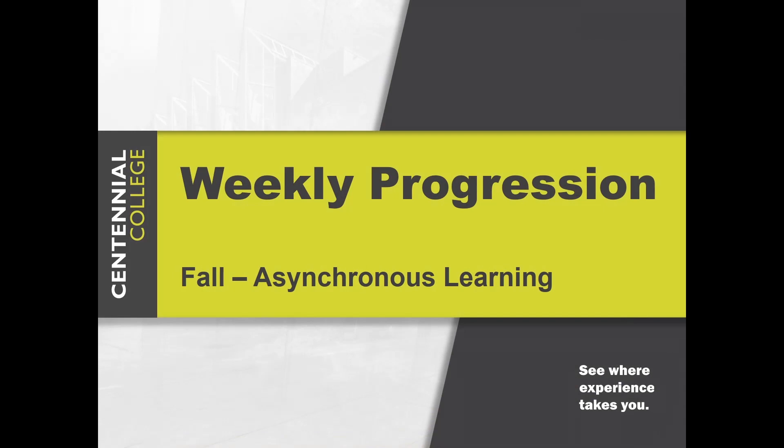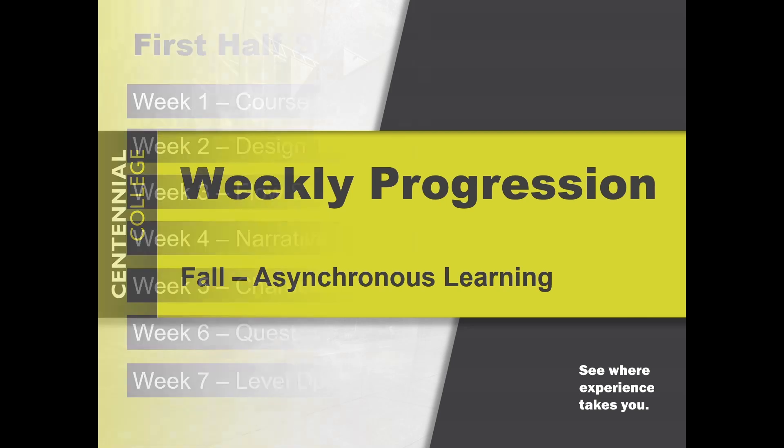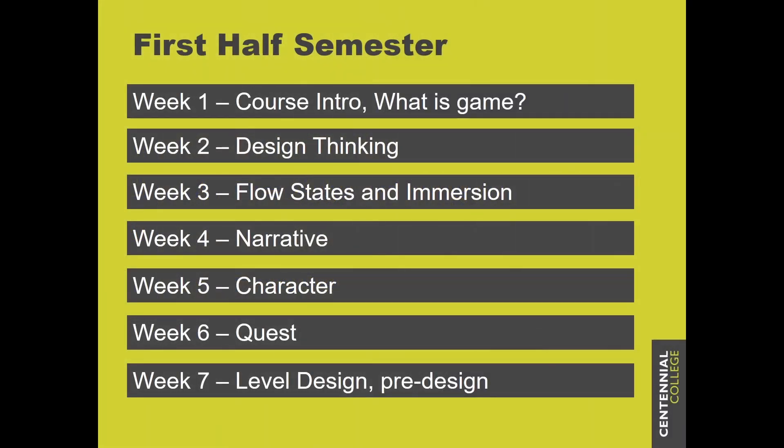Let's start by talking about what we're going to do each week. Looking at our weekly progression: Week one, we'll start with a course intro — which you're doing right now — and we're also going to start looking at exactly what a game is and what it means to define game. Week two is design thinking. Week three is flow states and immersion. Week four is narrative. Week five is character. Week six is quest. Week seven is level design and pre-design.